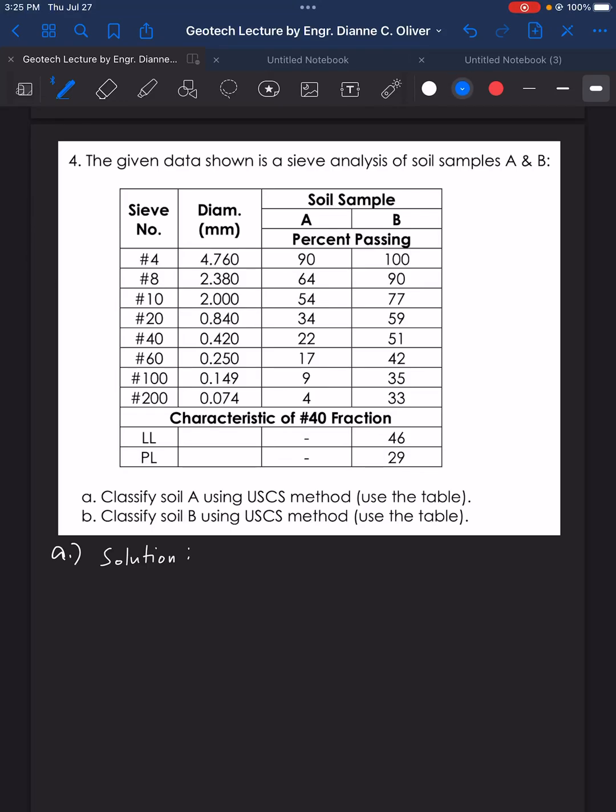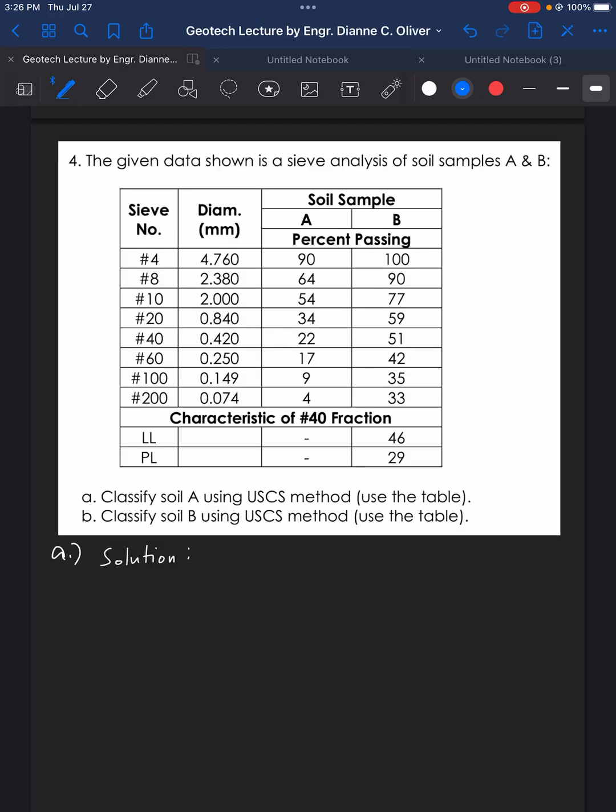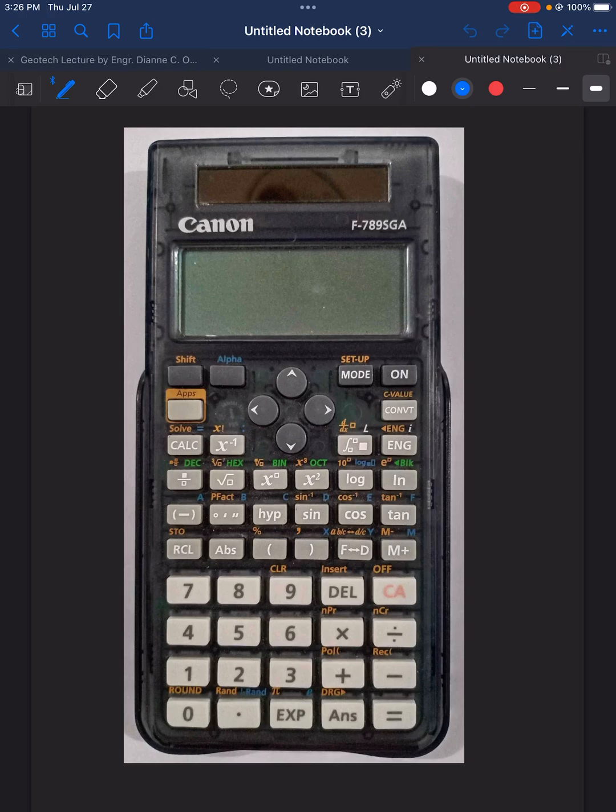In this video, we will solve problem number 4 in the classification of soil topic in our geotechnical engineering lecture using the Canon F789SGA calculator. This is different from our previous video because we used the Casio calculator. Now this time we will be using the Canon F789SGA calculator.